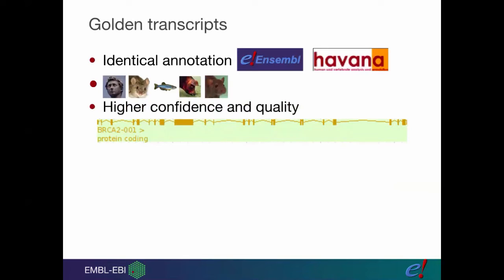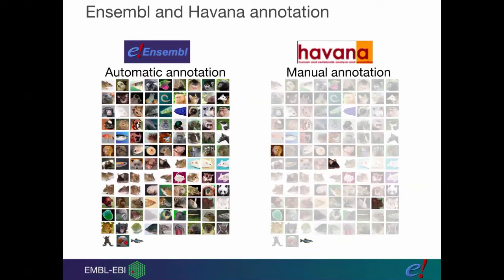The golden transcripts are identification between our two different methods, which we call Ensembl automatic and Havana manual annotation. We have these for human, mouse, zebrafish, and rat, and we consider these to be high confidence and quality.